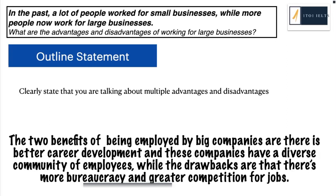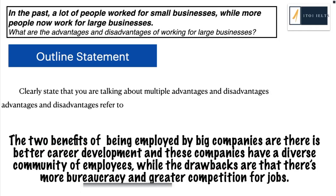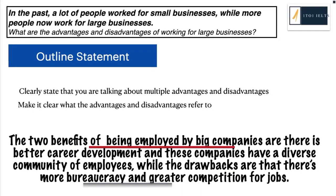When writing an outline statement for this type of essay, you need to clearly state that you're talking about multiple advantages and multiple disadvantages. The expressions I've used are underlined. At the beginning I said 'the two benefits of,' so it's very clear I'm referring to more than one advantage. And 'the drawbacks are' — again, it's very clear I'm referring to multiple disadvantages. You also want to make it clear what the advantages and disadvantages refer to. I've used a noun phrase: 'the two benefits of being employed by big companies are,' and then stated what those benefits are.